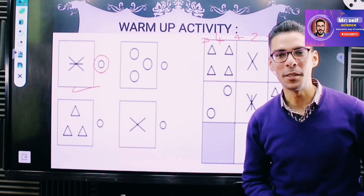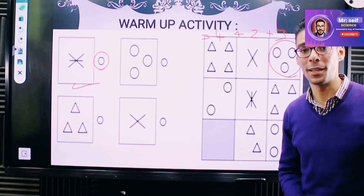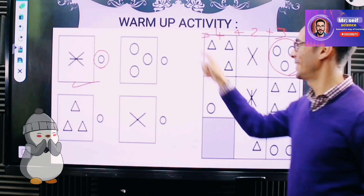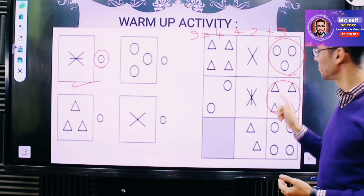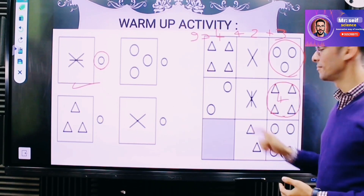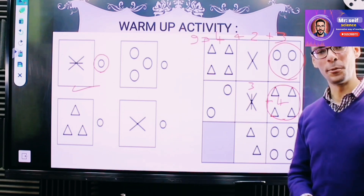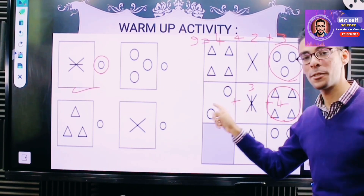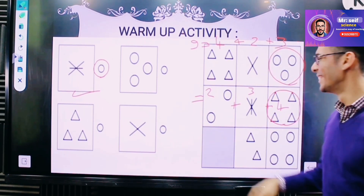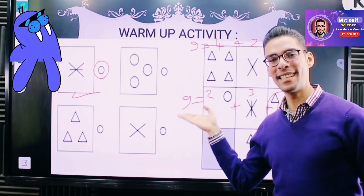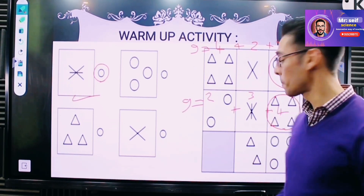Let's add them to each other: three plus two plus four. How many circles? Four. How many lines? Two. Equals nine. It's the same result as the previous line, but shown in three different shapes.